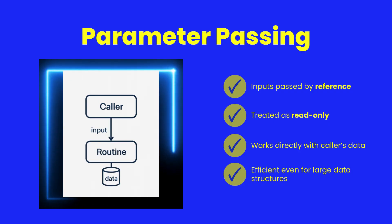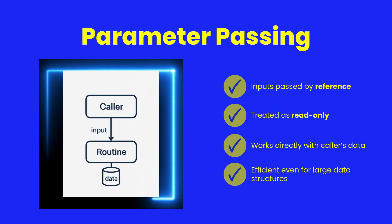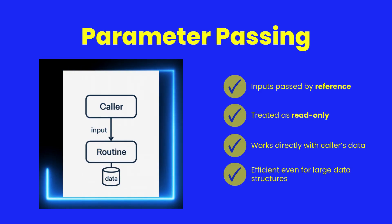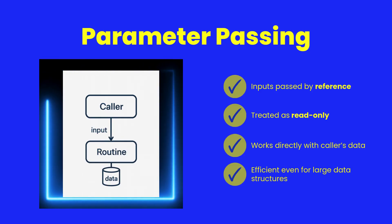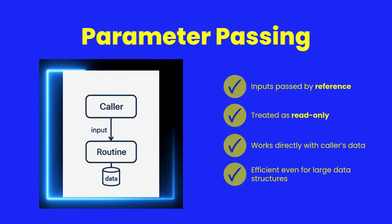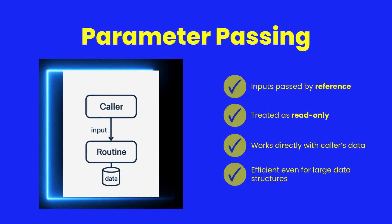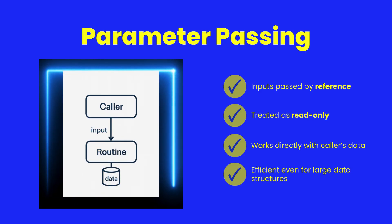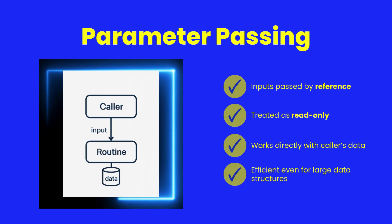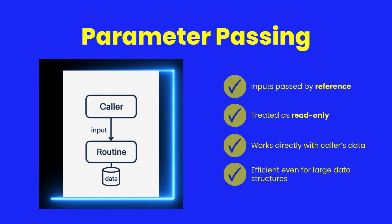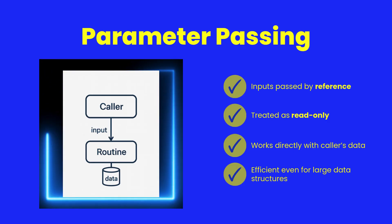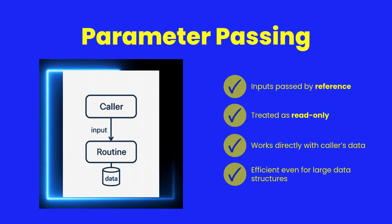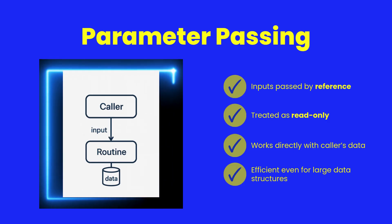By default, Shear Power passes with parameters by reference. That means no copying, no overhead, and your routines work directly with the caller's data. Even massive datasets can be passed around as efficiently as a single number.